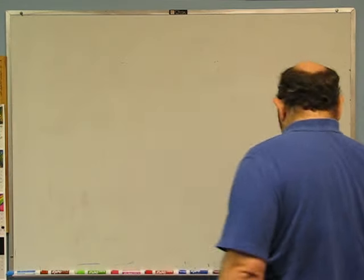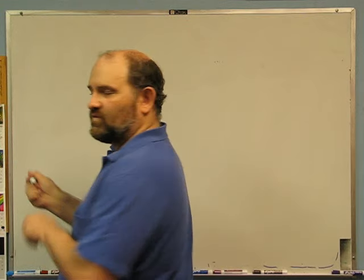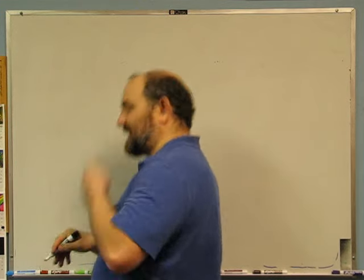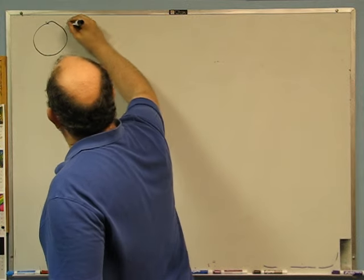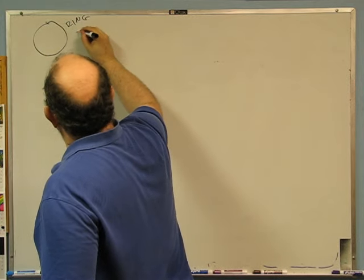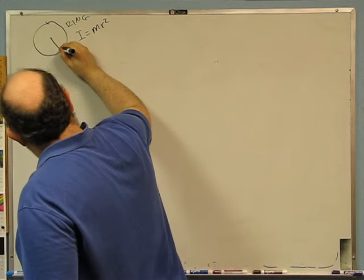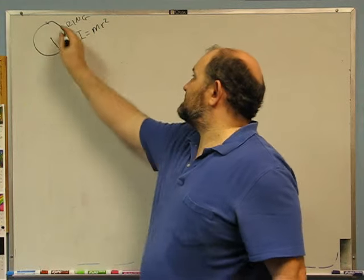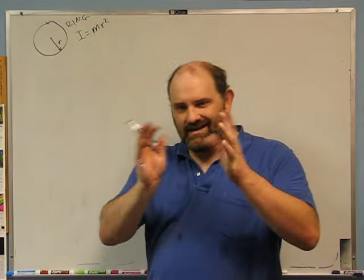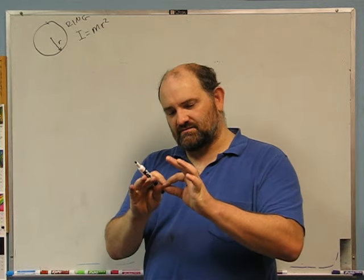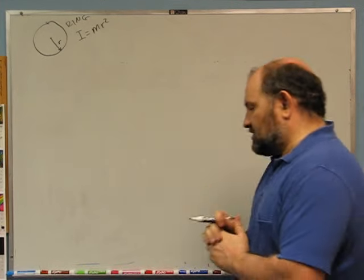Problem two. A bicycle wheel has most of its mass around its rim. We're going to approximate a bicycle wheel as a ring, because the moment of inertia of a ring is M*R², where R is the radius and M is the mass of all the stuff around the ring. We're assuming there's basically no mass at the axle and the spokes have basically no mass.